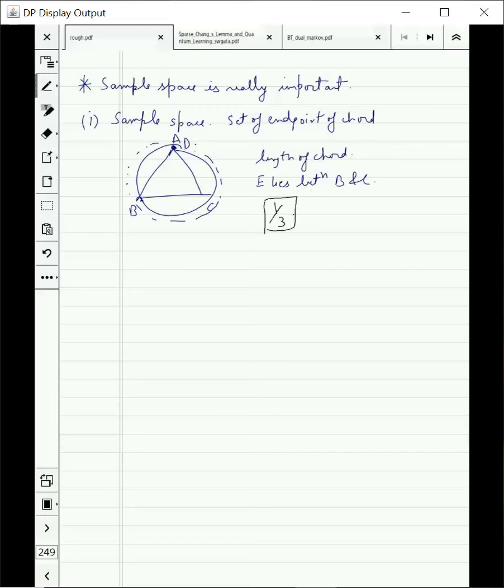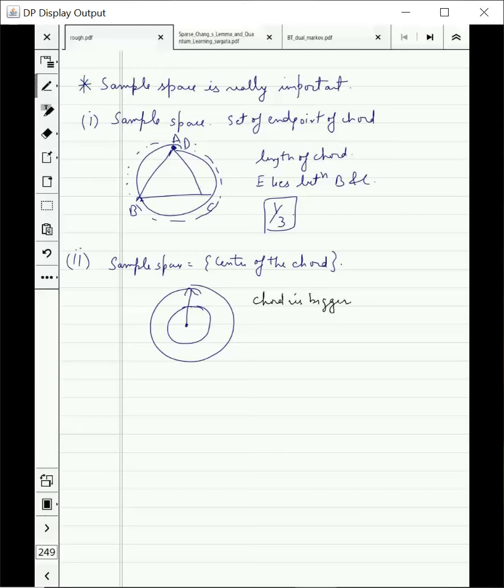If we change the sample space and say that our sample space is the center of the chord, then the chord is smaller only if the center lies outside the inner circle. The chord is bigger if the center lies inside the inner circle. Now you can compare the areas and you will see that if I throw a random point, the probability it hits the inside circle is 1/4.